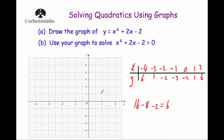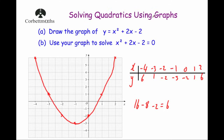We've got our points: (minus 4, 6), (minus 3, 1), (minus 2, minus 2), (minus 1, minus 3), (0, minus 2), (1, 1), and (2, 6). We plot those and put a curve through them — there's the graph.